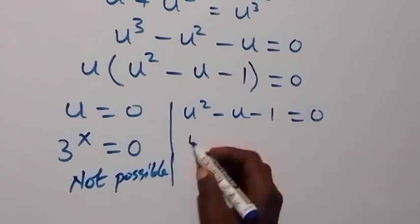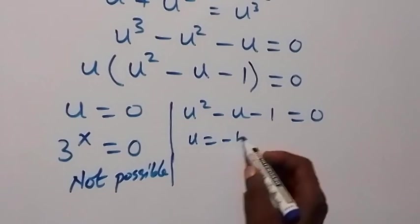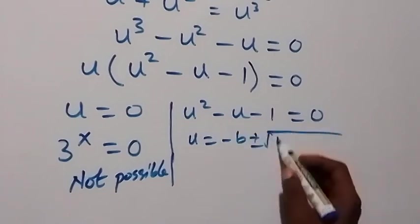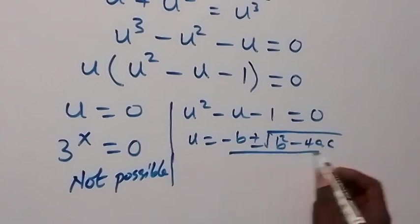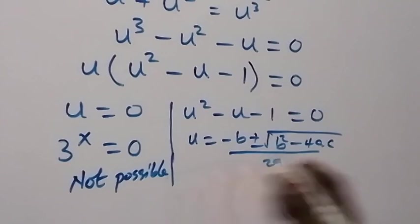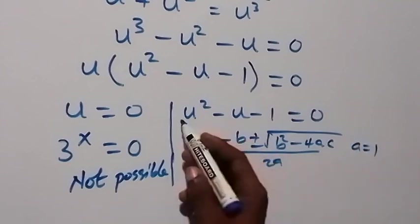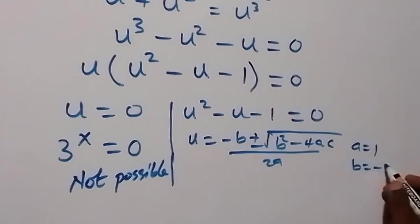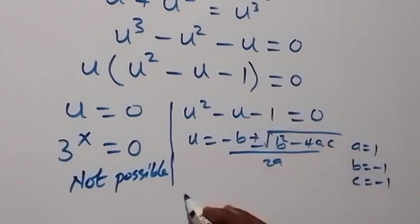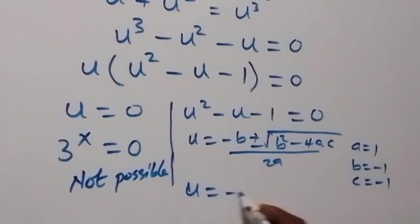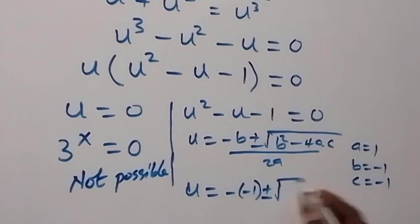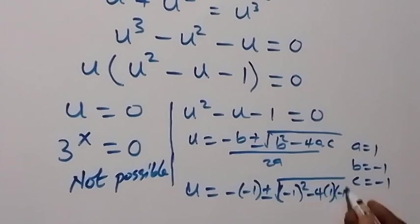Let's solve the quadratic equation using the quadratic formula: u equals negative b plus or minus square root of b squared minus 4ac, over 2a. Here a equals 1, b equals negative 1, and c equals negative 1. Substituting: u equals negative of negative 1, plus or minus square root of negative 1 squared minus 4 times 1 times negative 1, over 2 times 1.